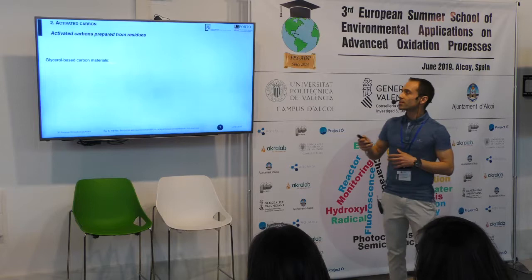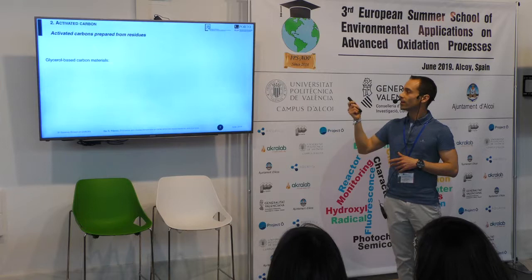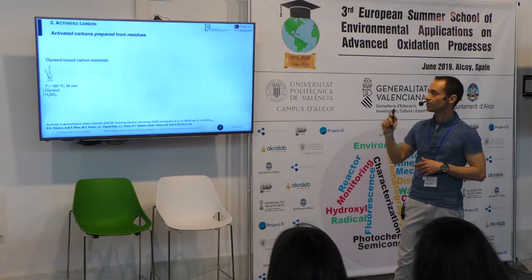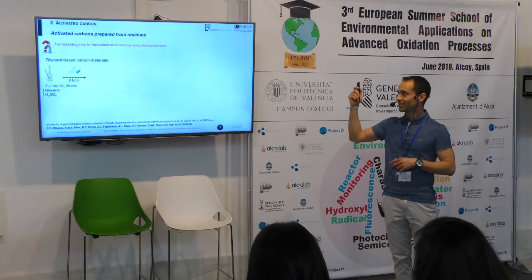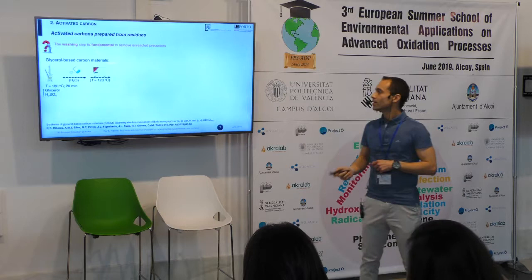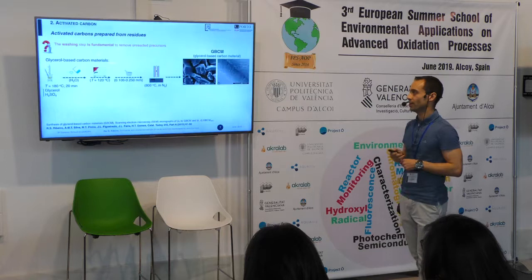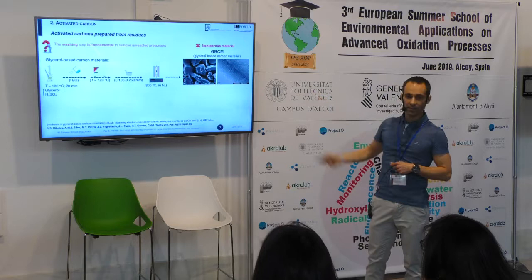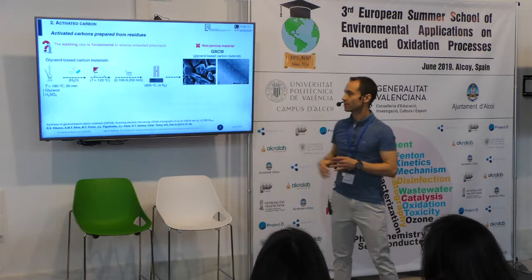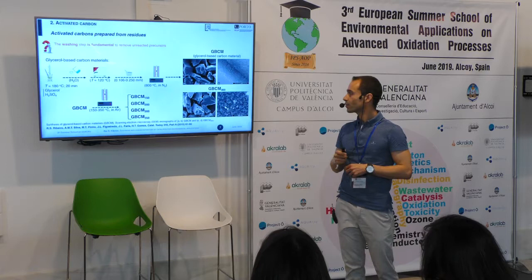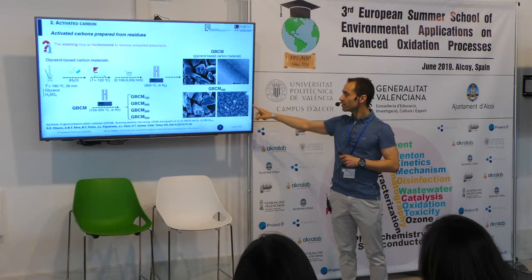Activated carbons can also be prepared from residues. We have prepared glycerol-based carbon materials by partial carbonization of glycerol in the presence of sulfuric acid. The drying step is crucial to remove unreacted precursors. The resulting material is then dried, ground, and thermally annealed, resulting in a non-porous glycerol-based carbon material. This material was then thermally activated under air atmosphere at different temperatures, leading to a significant increase of porosity.